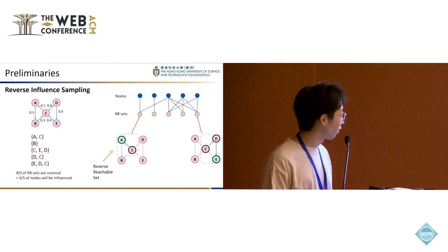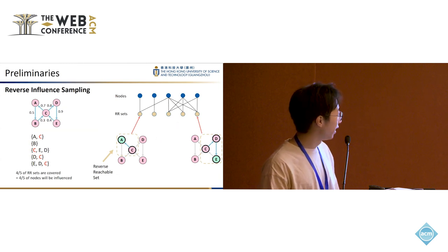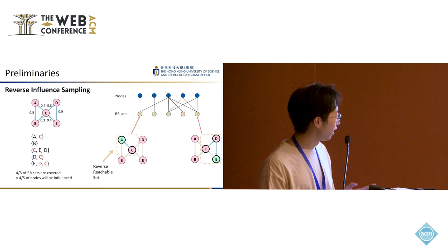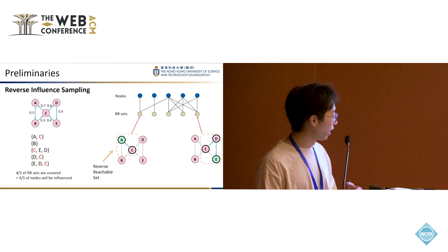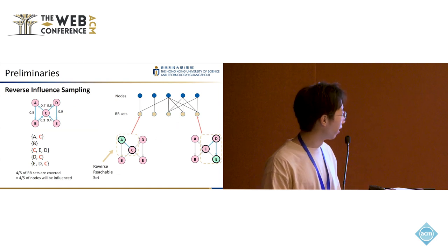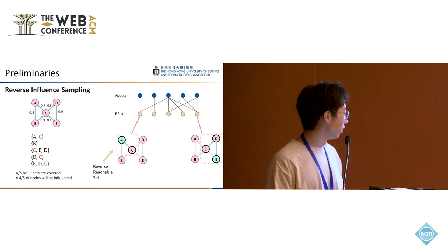A more concrete example is given here. We can see that node C appears in five random RR sets. Then we can say that four-fifths of the RR sets are covered by C, and thus we infer that four-fifths of nodes will be influenced by C.